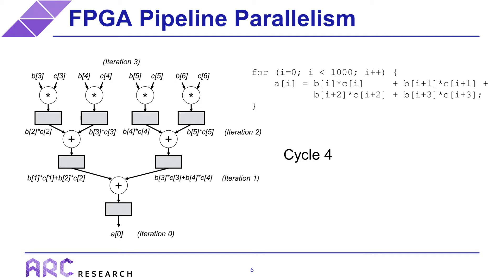In cycle four, the pipeline produces the first output, which is usually sent to some kind of memory, but could also be sent to any output from the FPGA such as PCI Express or networking. In cycle five, the output from iteration one is produced. The pattern here is that each stage of the pipeline contains the latest state of the computation for a given iteration, and a new iteration starts every cycle, at least in the ideal case.